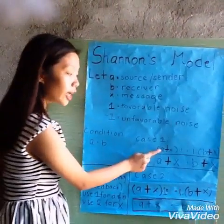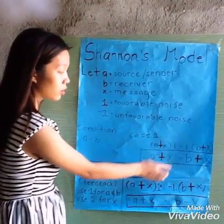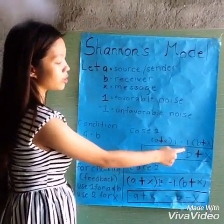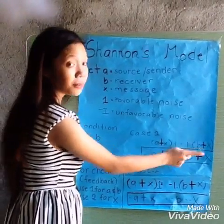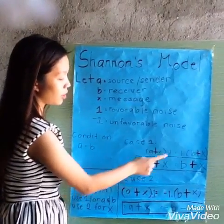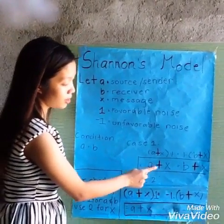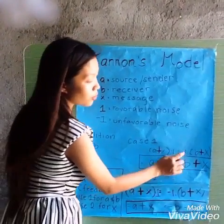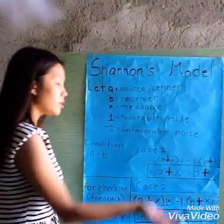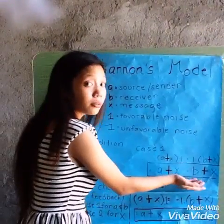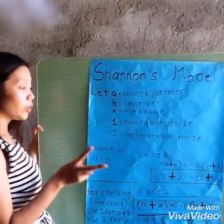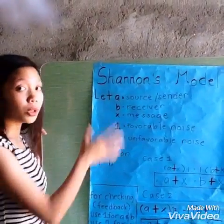For case one with favorable noise: A plus X times one equals one times B plus X. One times A equals A, one times X equals X, one times B equals B. Which means they are not both equal because the sender and the receiver are both positive, so there is noise between them.